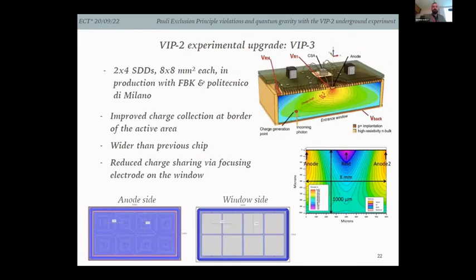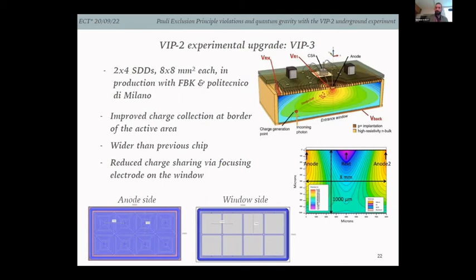These are pictures of the SDDs in production with FBK and Politecnico di Milano. The picture shows the field density inside the semiconductor. The new SDD is not only thicker but also has improved charge collection at the border of the active area, is wider — giving higher global collection efficiency — and has reduced charge sharing achieved with focusing electrodes.